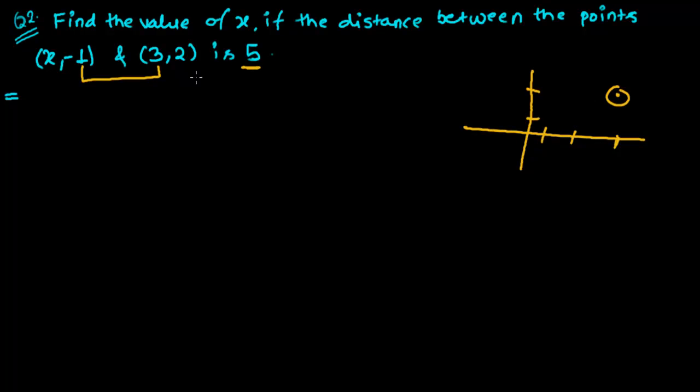Another is (x, -1). So x may be somewhere, I don't know, just suppose somewhere. And -1 somewhere, it's -1, one step minus downward. So distance between these two points is 5 unit. So it is (3, 2) and this is (x, -1).